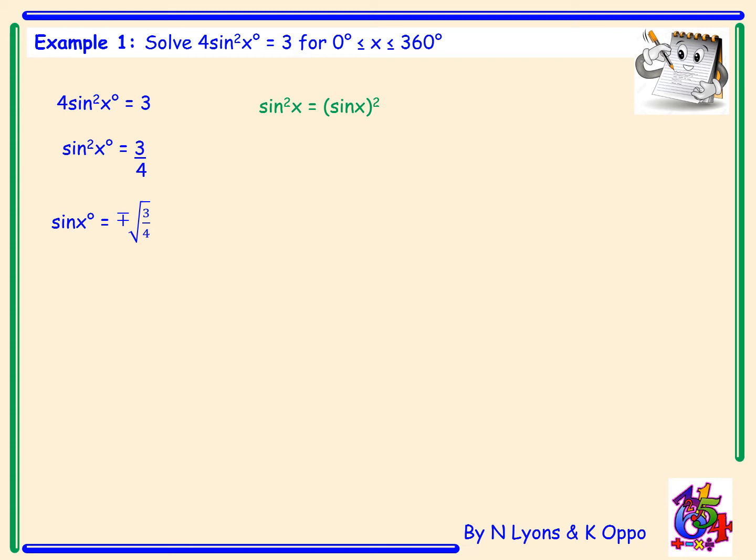We'll also need to simplify our fractional root. That will be the same as the square root of 3 over root 4, but root 4 can be simplified to 2. So rearranging, we have sin x equal to plus or minus root 3 over 2.